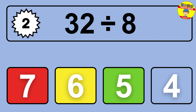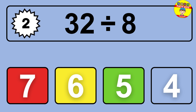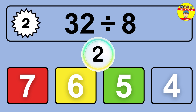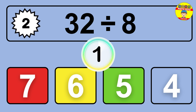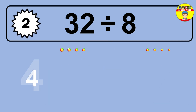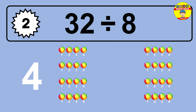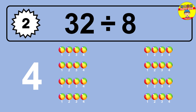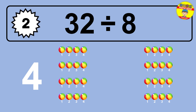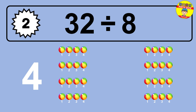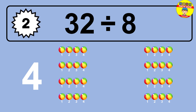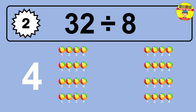32 divided by 8 is... time to think. Let's go to the solution. Divide the number 32 by 8. Each group contains 8 units, so dividing 32 by 8 results in 4 equal groups. Thus, the result is 32 divided by 8 equals 4.